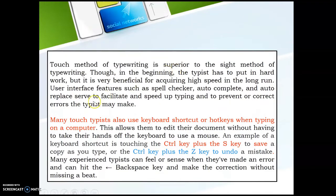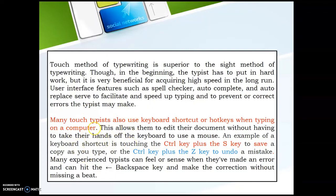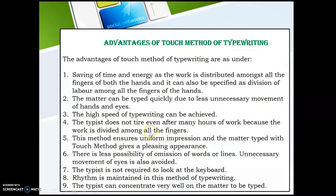Touch method of typewriting is superior to sight method because the typist can type at very high speed. Many touch typists also use keyboard shortcut hotkeys when typing on the computer — for example, Ctrl+C for copy and Ctrl+V for paste — so there is no need to touch the mouse. The advantages of touch method include saving time and energy, as the work is distributed amongst all fingers of both hands — it can be specified as the division of labor among all fingers.